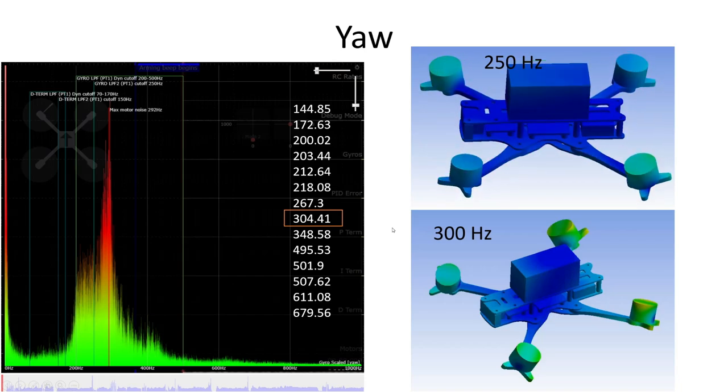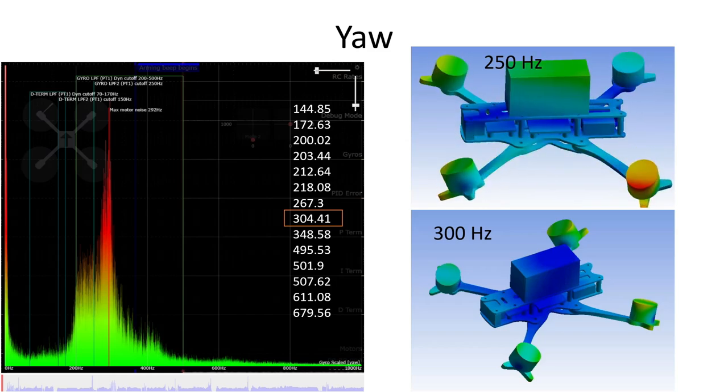And what we can see is that the quad is moving around, and there's clearly a yaw component to that movement, and that yaw component is what you're seeing in the black box log.